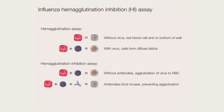The basic assays for flu are hemagglutination inhibition assays, which I'll just call HI. In a hemagglutination assay, you put red blood cells in a well — they'll sink to the bottom. But if you put virus in with the red blood cells, the virus naturally binds to the sialic acid receptors on the surface, causing a diffuse lattice. You have an assay for presence or absence of virus. Then you can make this an inhibition assay by including antibodies — if these bind to the virus, that will prevent the virus from binding to the red blood cell.